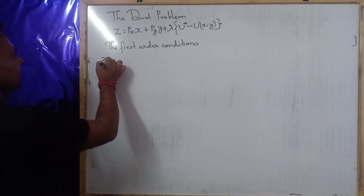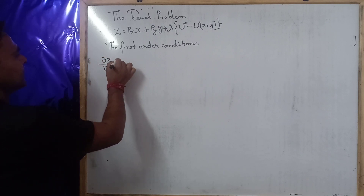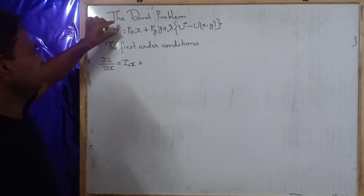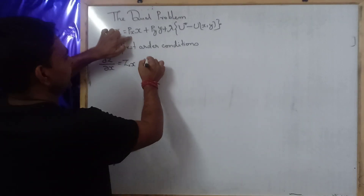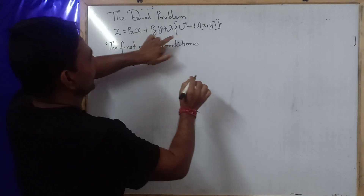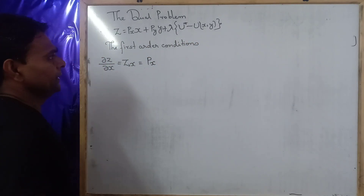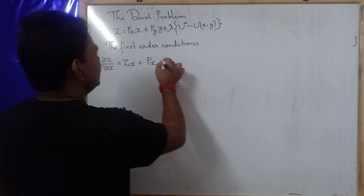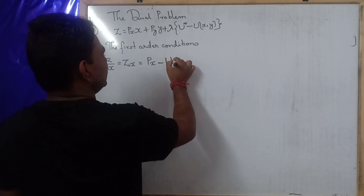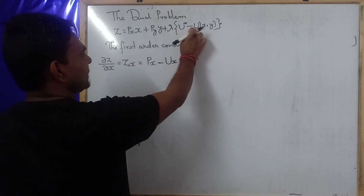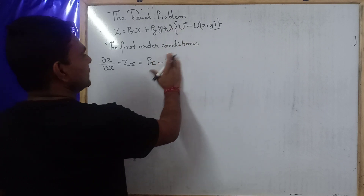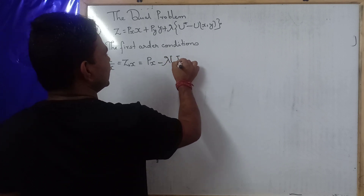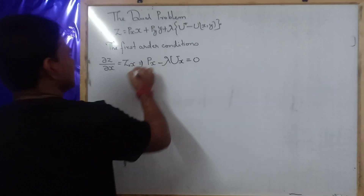The first order condition: δZ/δx = Zx = Px − λ·Ux = 0. Here, taking the partial derivative of Z with respect to x, we get Px on one side, and since U is a function of x, its derivative is Ux, giving us Px − λ·Ux = 0.